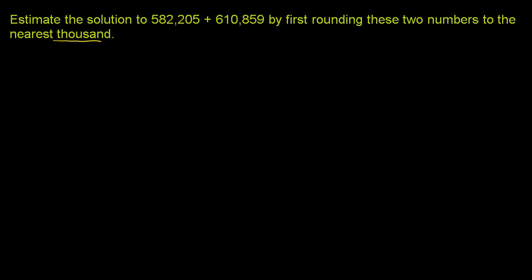So let's do each of these numbers. If we start off with 582,205, we want to round to the nearest thousand. You go to the thousands place, and you go one place below that. If that's 5 or greater, round up. If it's less than 5, round down.